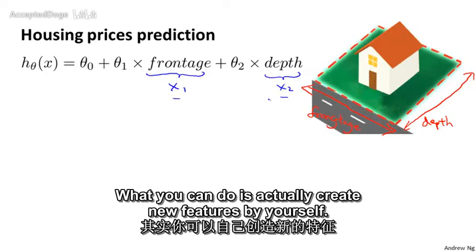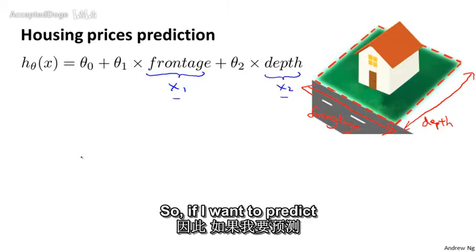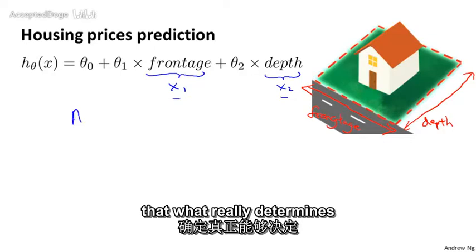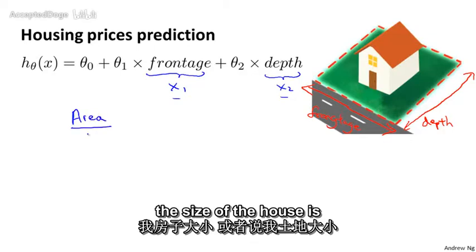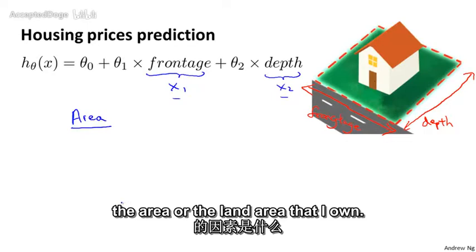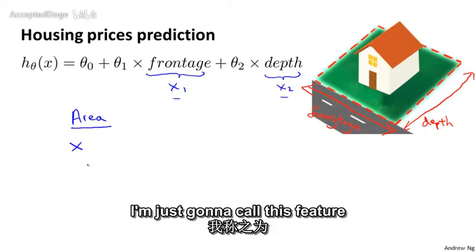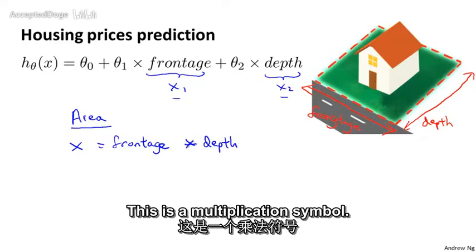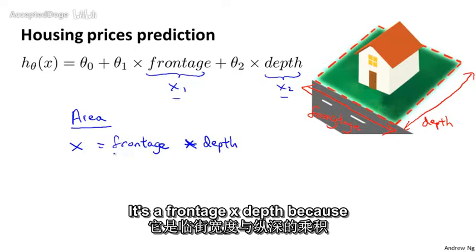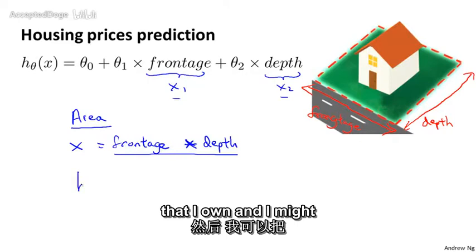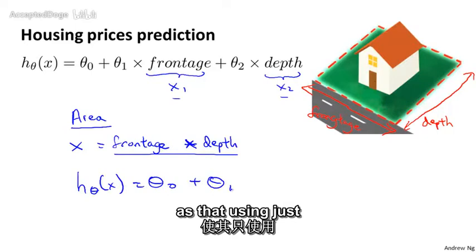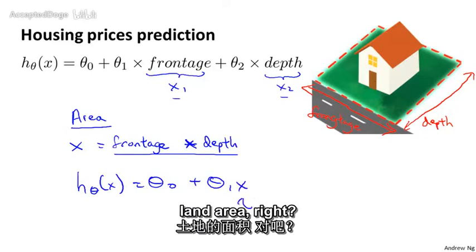What you can do is actually create new features by yourself. So if I want to predict the price of a house, what I might do instead is decide that what really determines the size of a house is the area, really the land area that I own. So I might create a new feature. I just call this feature x, which is frontage times depth. This is a multiplication symbol, right? So frontage times depth, because this is the land area that I own. And I might then select my hypothesis as that, using just one feature, which is my land area.